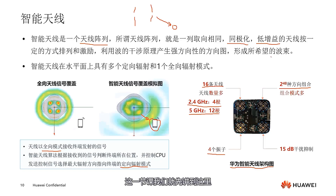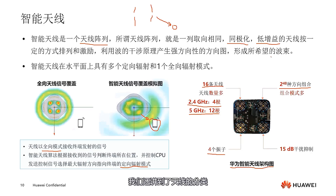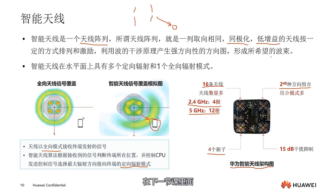In this lesson, we covered the definition and functions of antennas, some of their properties, the classification and forms of antennas, and introduced smart antennas. In the next lesson, we will discuss technical points related to antennas, including the basic operating principles and classic performance parameters of antennas.